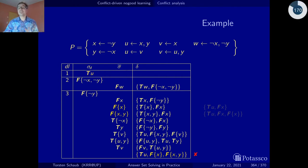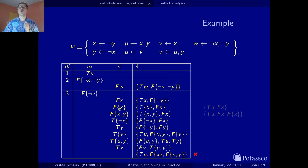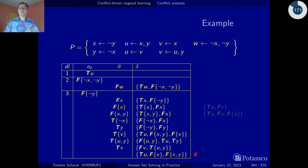The first thing to note is that this conflict no-good does not contain a unique implication point — it still contains two literals from the current decision level. Hence we have to eliminate at least one. Our strategy says we do this by resolving out the last literal added to the assignment. We do this by resolving our conflict no-good with the reason no-good for this literal.